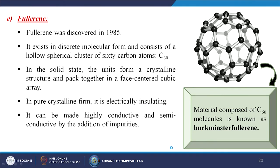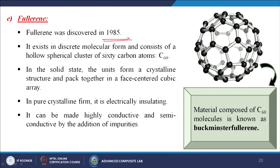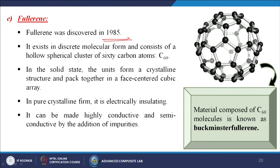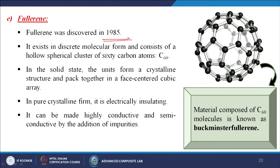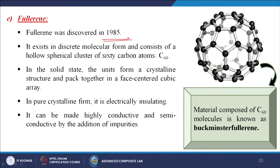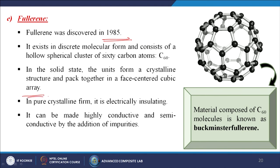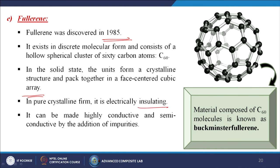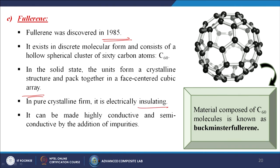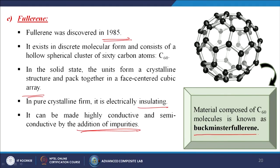Fullerene was first discovered in 1985. It exists in discrete molecular form and consists of a hollow spherical cluster of 60 carbon atoms — called C60 — which looks like a football. In the solid state, the units form a crystalline structure packed in a face centered cubic array. In pure crystalline form it is electrically insulating, but can be made highly conductive or semi-conductive by doping or additions of impurities. It is sometimes known as Buckminster fullerene.